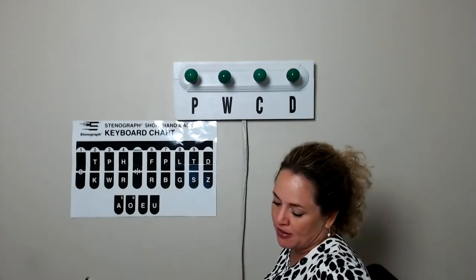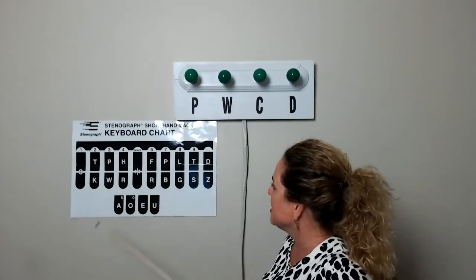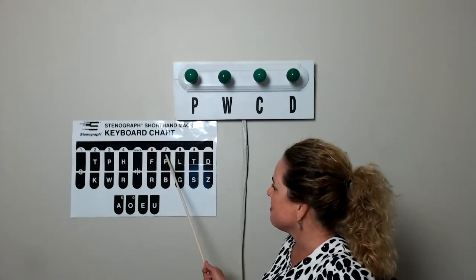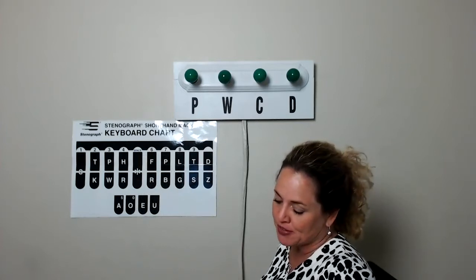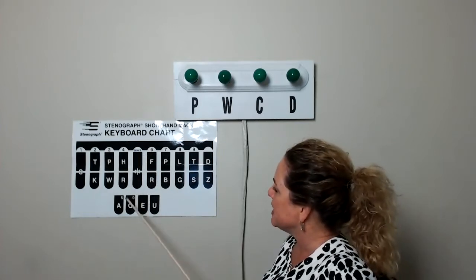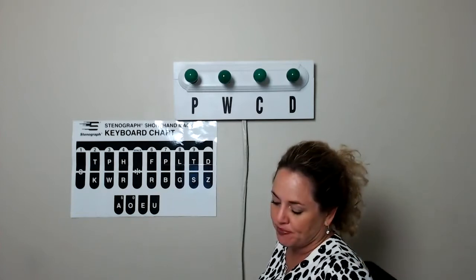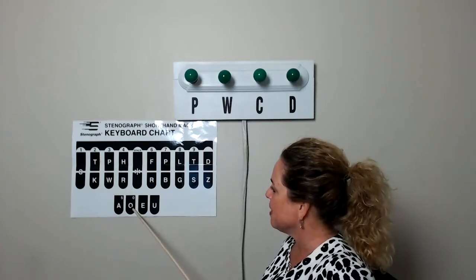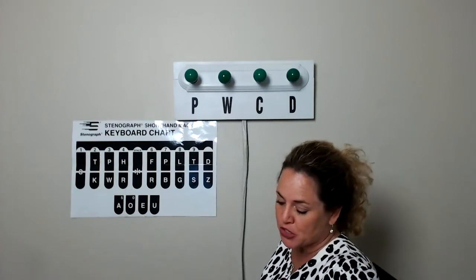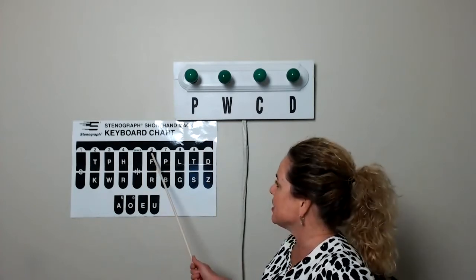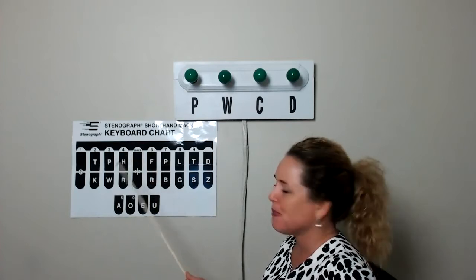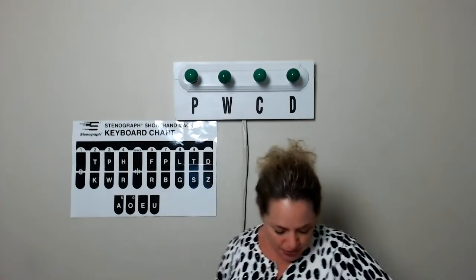Number five: bald — B, A, U, L, D. Number six: viewed — V, long U, second stroke come back for final D. Number seven is 87 — strike the eight, lift up, strike the seven, lift up, then strike your comma to separate from the next number. Number eight is thirty — three, zero, all in one stroke. Number nine is twenty — two, zero, both in one stroke. Number ten is sixty-six — strike six, lift up, strike six again, lift up. If you struggled with any of those, go back and review before starting Lesson 19.